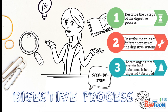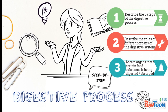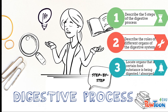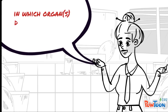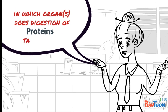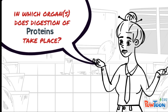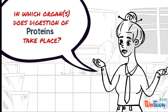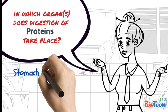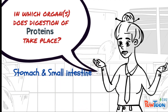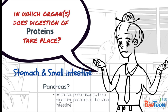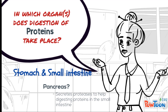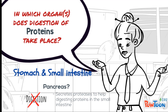That wraps up our introduction to the digestive process. Let's do a quick check: in which organ does digestion of proteins take place? The answers are the stomach and the small intestine. Remember, the pancreas only secretes enzymes — the proteases — which aid the digestion of proteins in the small intestine, but digestion itself does not take place in the pancreas.